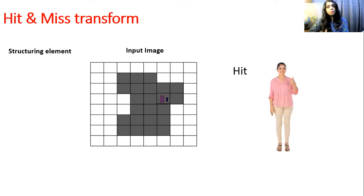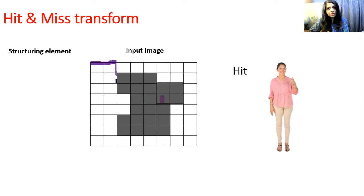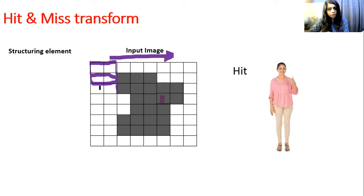So these are the meanings of miss, hit, and fit. Now, how to proceed: whenever we have this structuring element, we have to start at the first position and then slide this structuring element towards the right. After that, bring it to the next row and again slide it to the right, and so on until the end position.